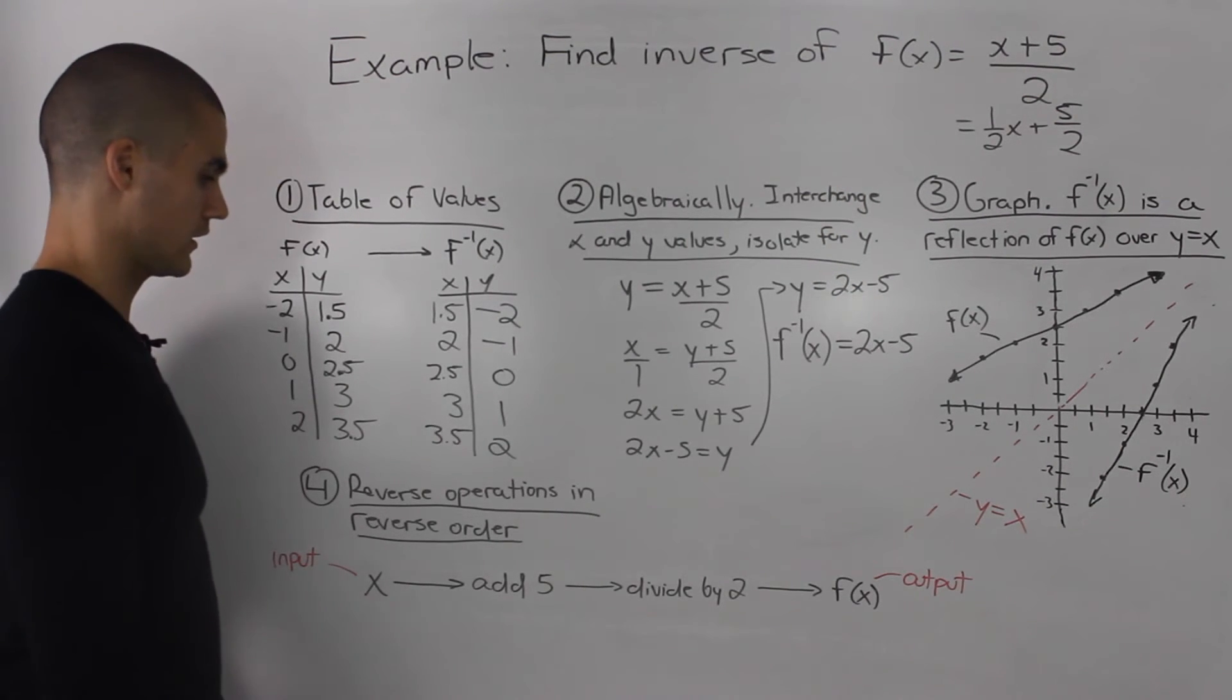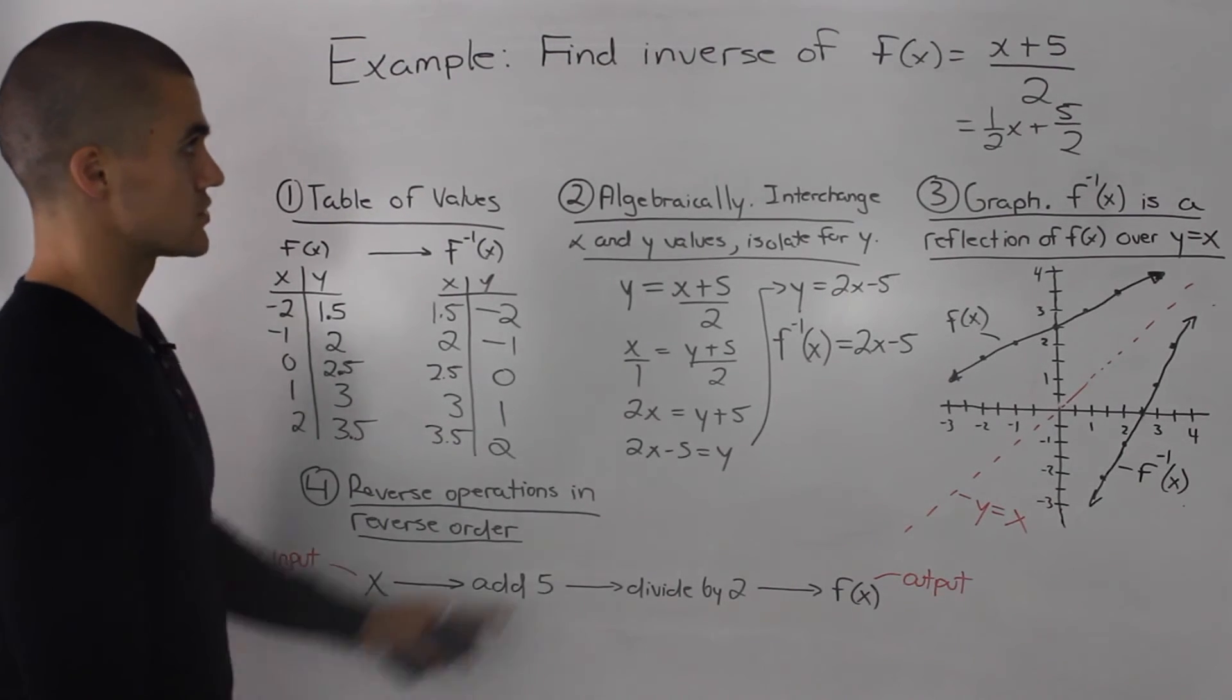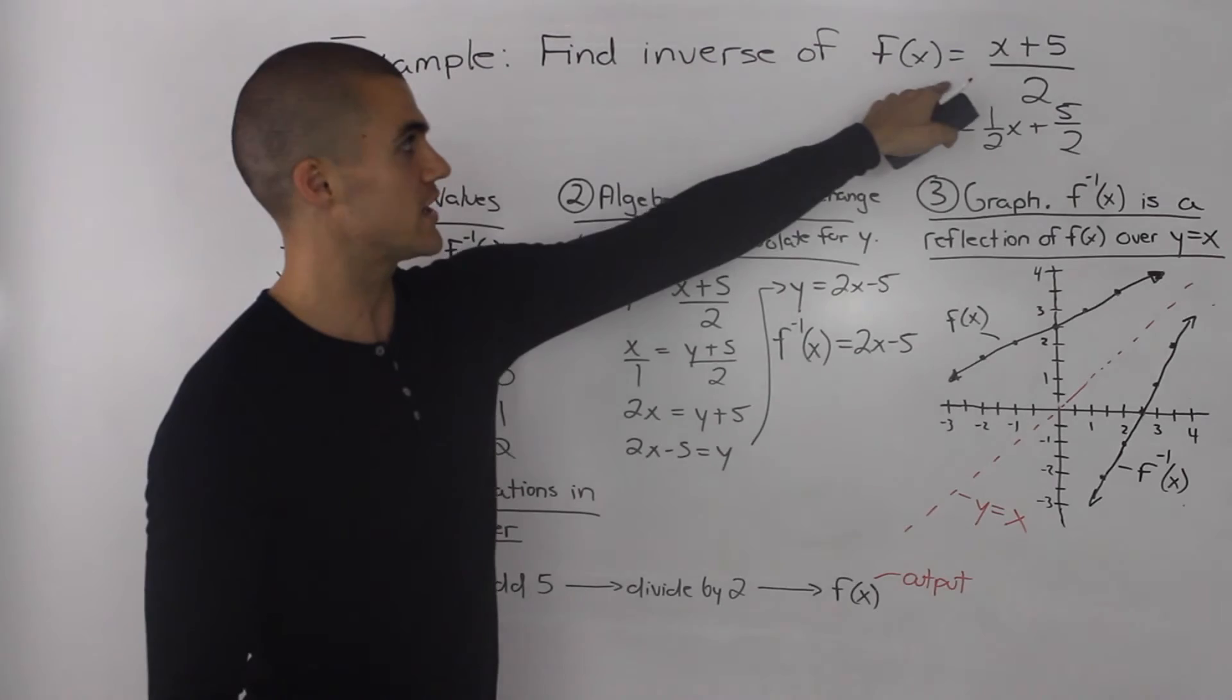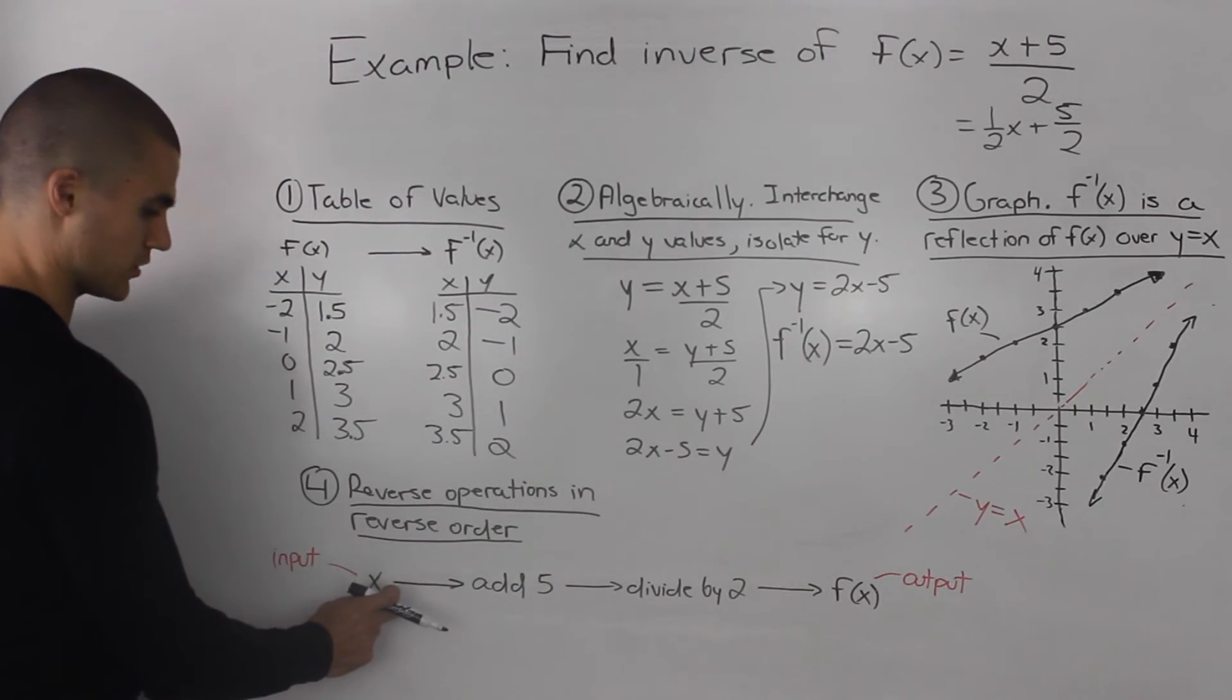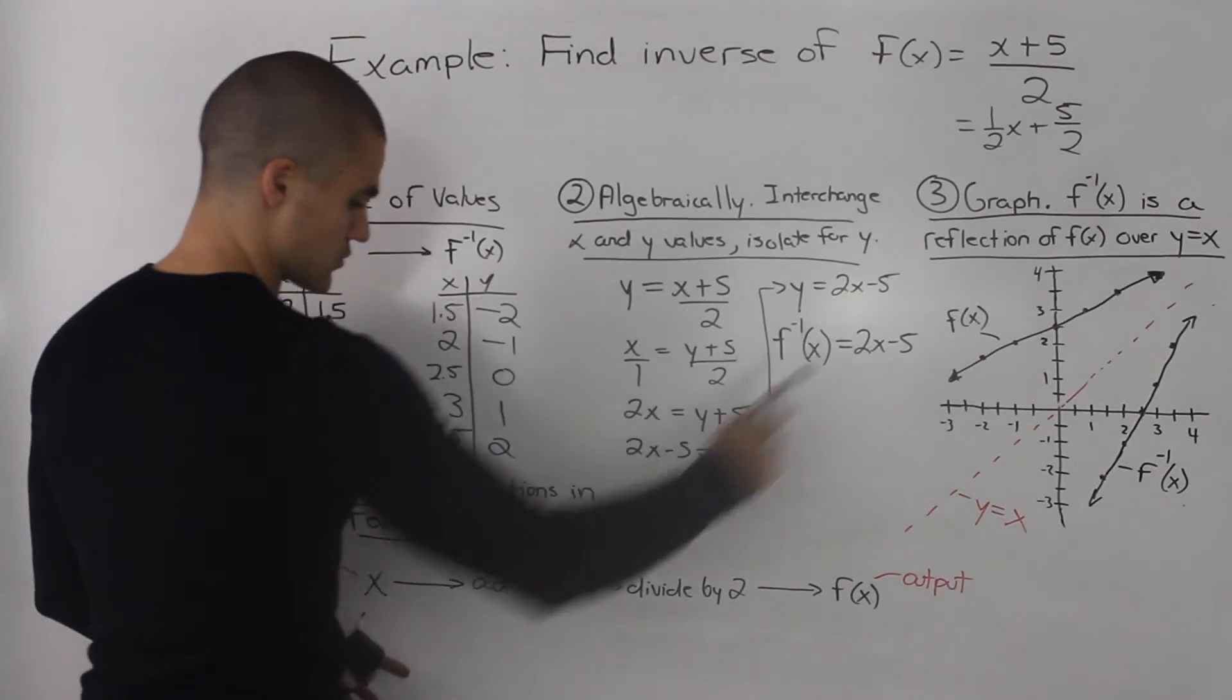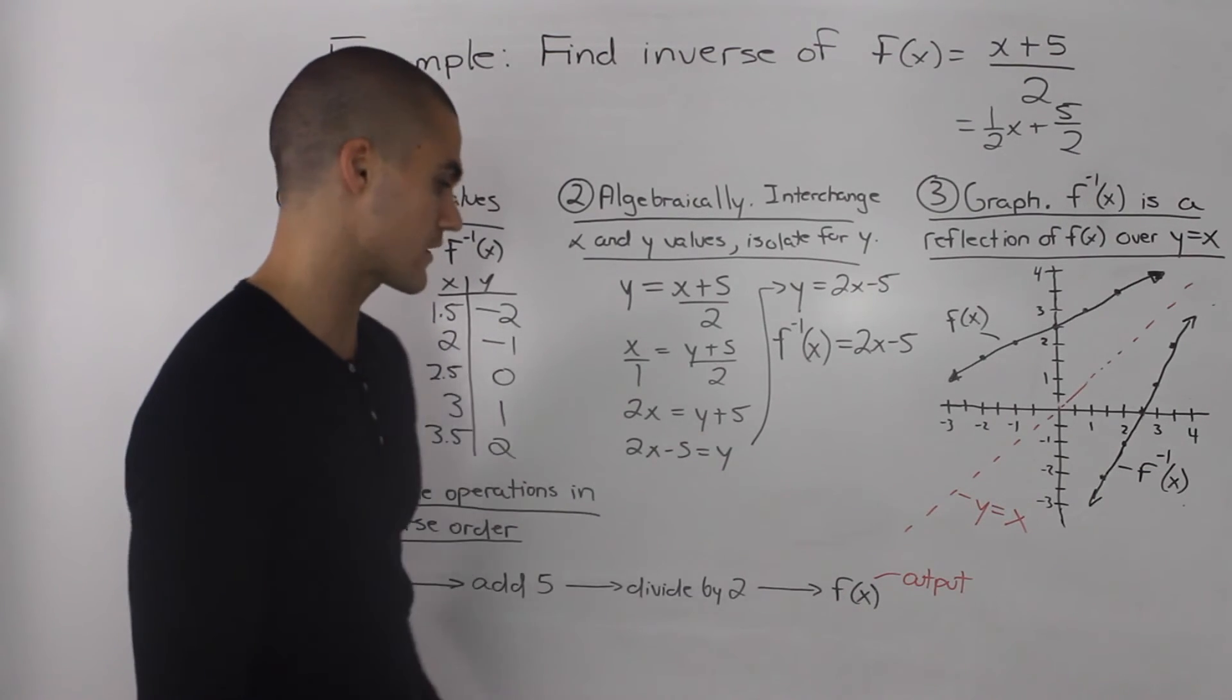And the fourth and final way to find an inverse is to reverse the operations in reverse order. So with our original function (x+5)/2, what are we doing? Well, we're taking an input x or a number x, we add 5 to it and then we divide everything by 2 and we end up getting our output f(x).